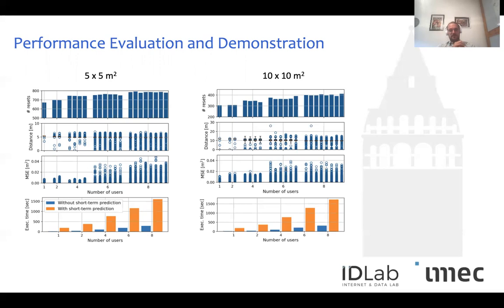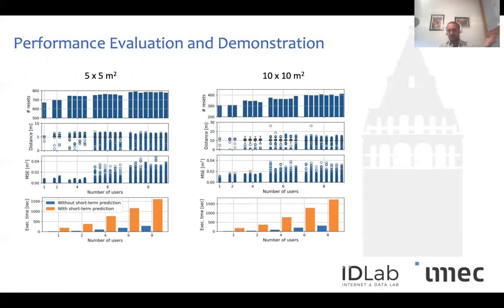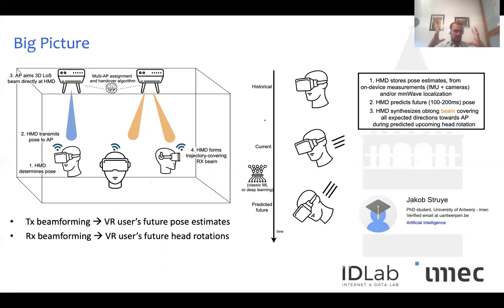In terms of execution time, the size of the environment does not play a role, but the number of co-located users does — more users means higher execution times. For eight users, we get an execution time of approximately 1500 seconds, which we believe is reasonable and sufficient for rapid assessments of a variety of different hypotheses.